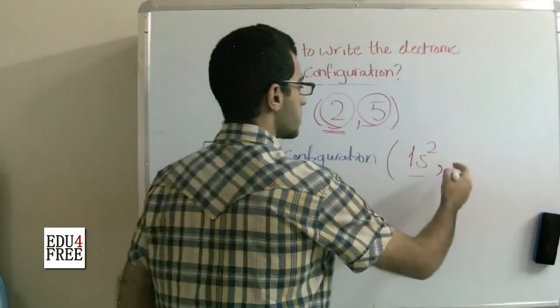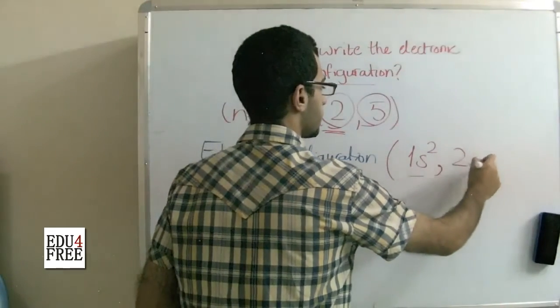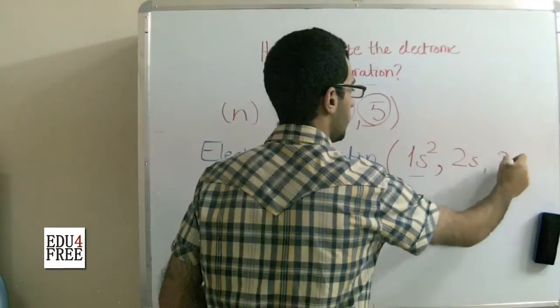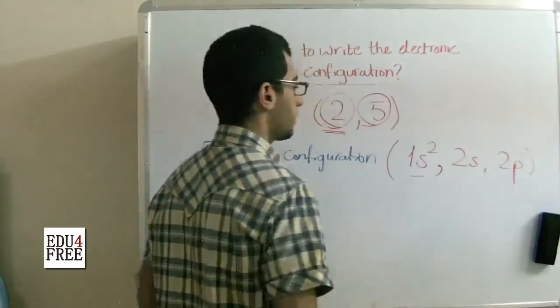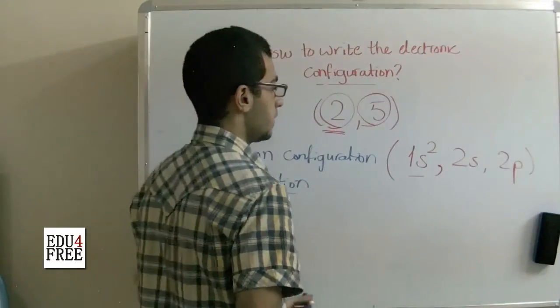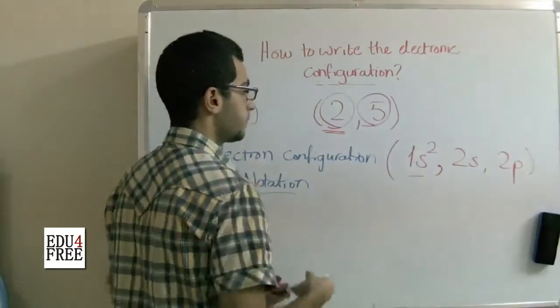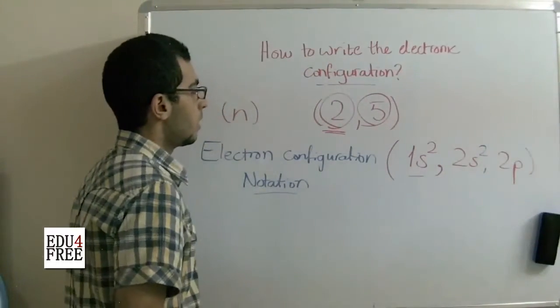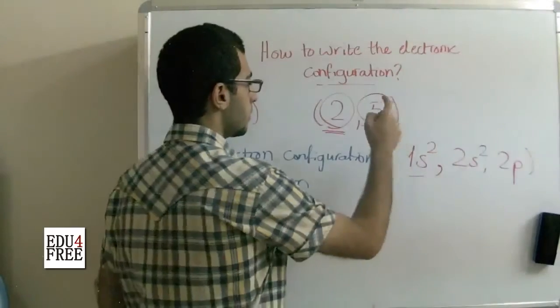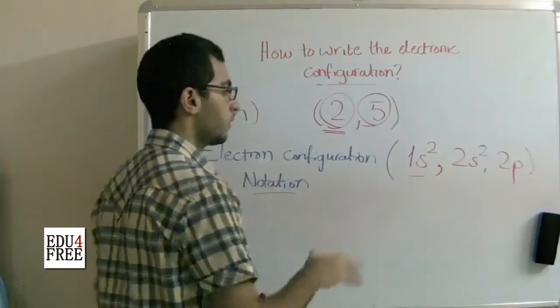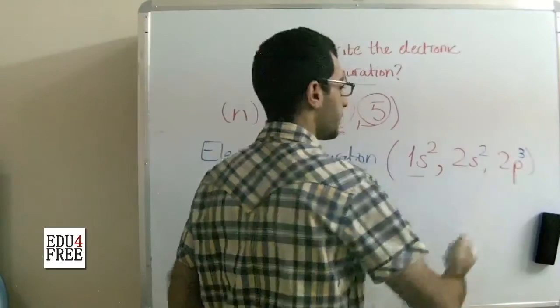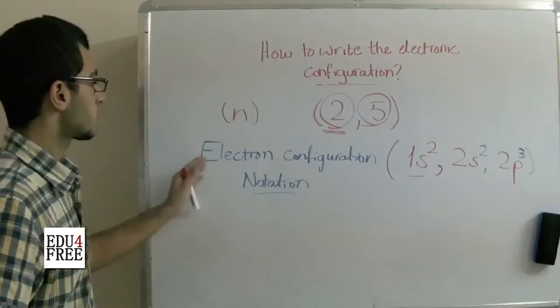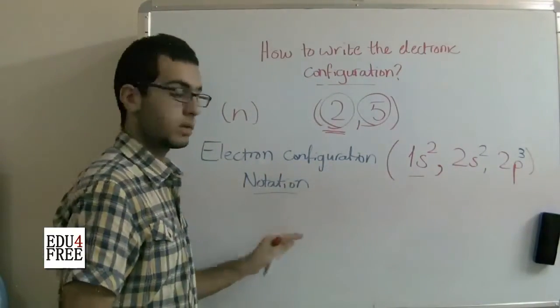Then the second energy level has the 2s and 2p sublevels. The s is of course full with 2 electrons, and 5 minus 2 equals 3, so the p contains 3 electrons. This is called the electron configuration notation.